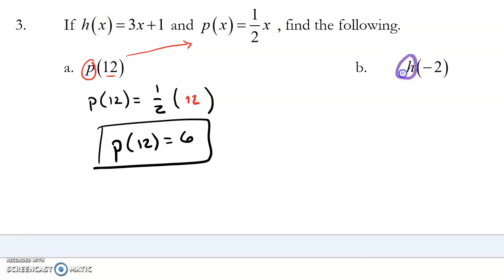So h of negative 2 is going to be equal to 3 times x plus 1. x is my negative 2. Follow the order of operations. Negative 6 plus 1 is negative 5. The function h, when my input value is negative 2, results in an output of negative 5.